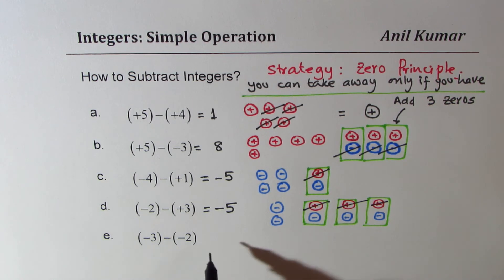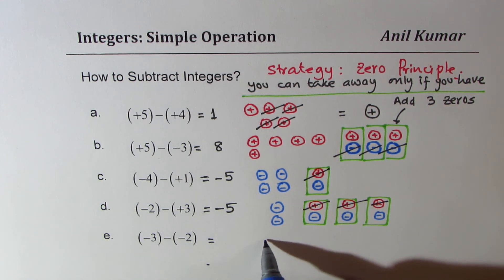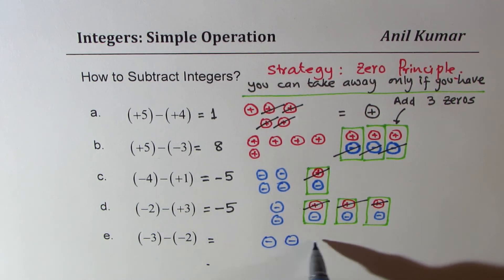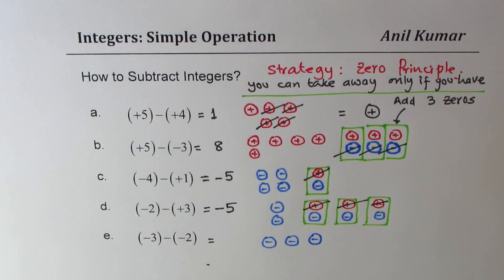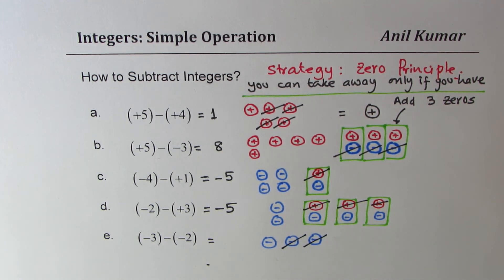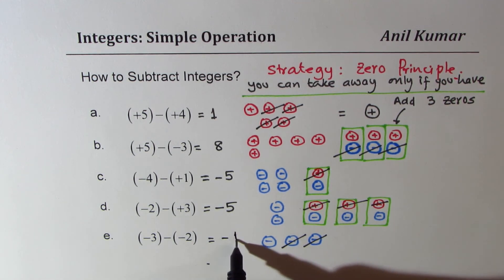The last one — we have 3 negatives: 1, 2, 3. And we have to take away 2 negatives. Since we have them, we can take them away. We are left with just 1 negative.